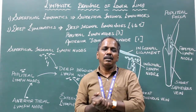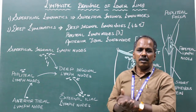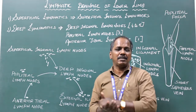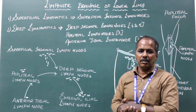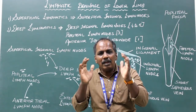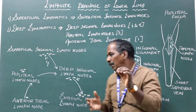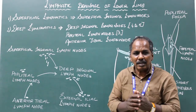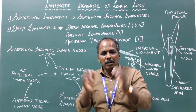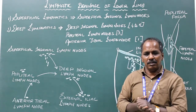Most of the lymph vessels of the lower limb are often blocked by microfilarial parasites. This causes massive edema of the lower limb because the superficial tissue, drained by the lymphatic channels, accumulates fluid. This results in a condition called elephantiasis.